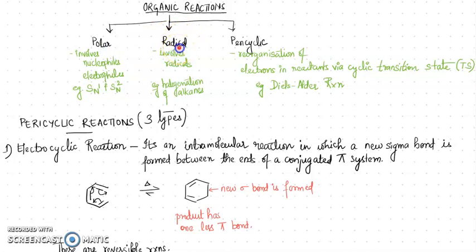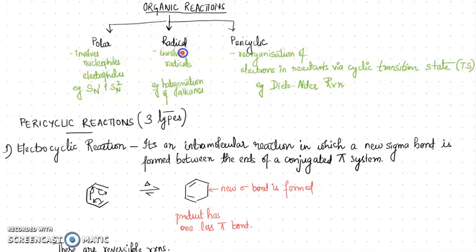The second type of reaction is radical reactions. What is involved here is not charged species but rather radicals. You might have come across the halogenation of alkanes — those reactions come under the category of free radical reactions, because in the presence of light, halogens undergo homolytic cleavage leading to the formation of halide radicals, which then halogenate your alkanes.